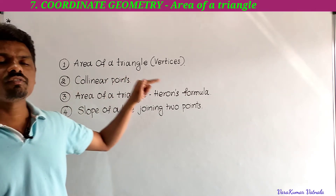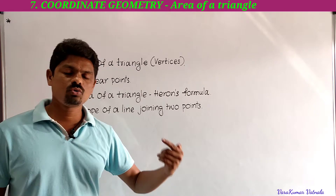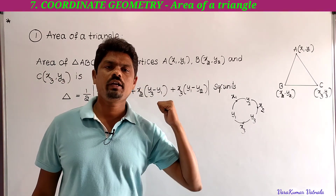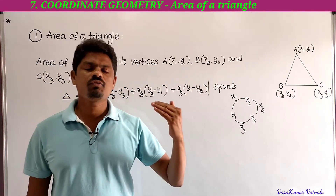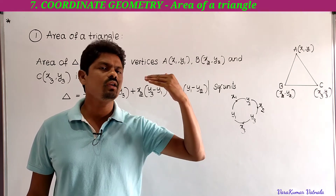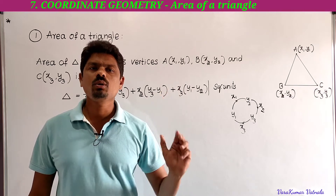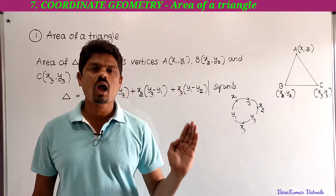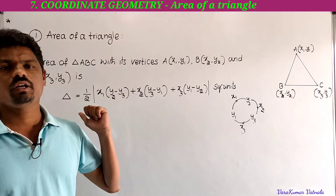First, we have to learn about the area of a triangle when the vertices of a triangle are given. We know the area of a triangle equals half into base into height — this is the general formula when we know the length of the base and height. But if he gives the vertices of a triangle, how can we find the area?